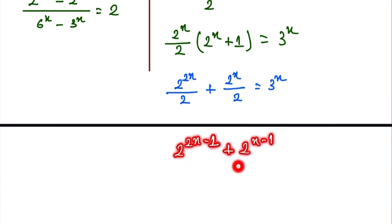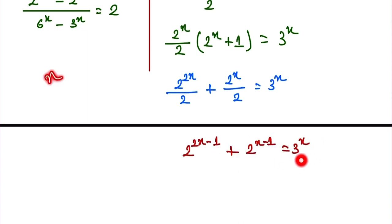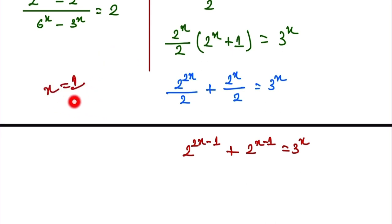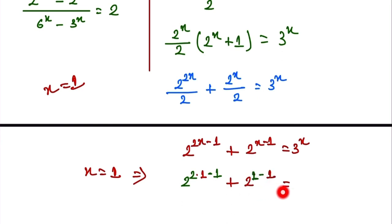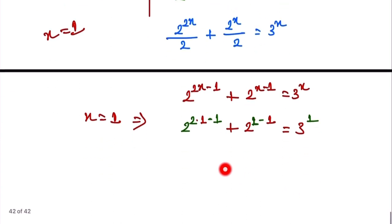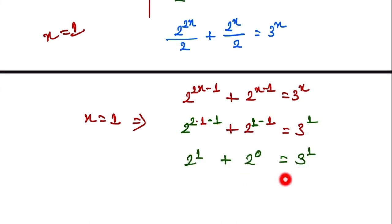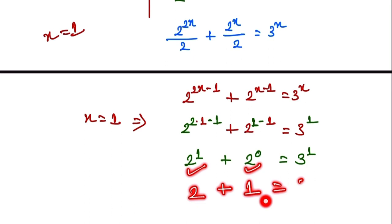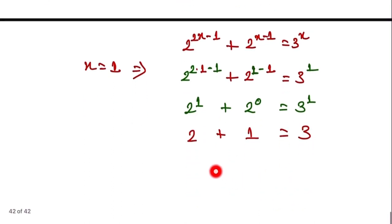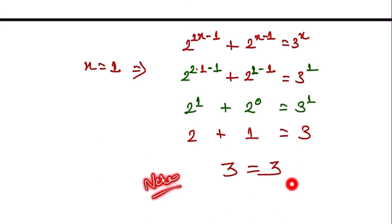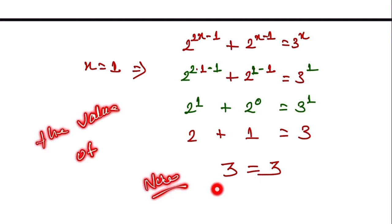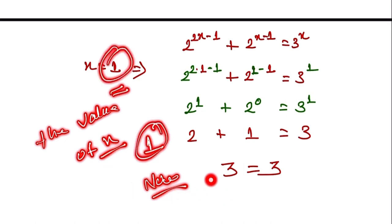Subtracting the exponents when dividing with the same base, we get 2 to the power (2x minus 1) plus 2 to the power (x minus 1) equals 3 to the power x. We already know x is not equal to 0, so we try x equals 1. Substituting: 2 to the power (2×1 minus 1) plus 2 to the power (1 minus 1) equals 3 to the power 1. This gives 2 to the power 1 plus 2 to the power 0 equals 3, which is 2 plus 1 equals 3. This is true, so the final value of x is equal to 1.